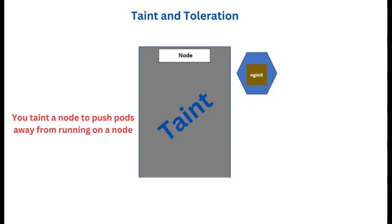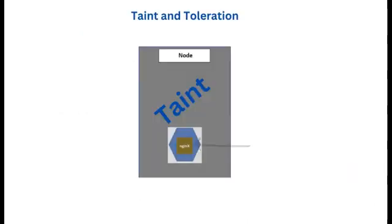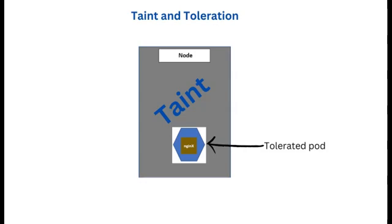So what is toleration? From the word toleration, which means to allow or permit. Similarly, toleration in Kubernetes or OpenShift means permit or tolerate only this set of pods to run on a tainted node. Taints are applied to nodes while tolerations are applied to pods, and that's the reason most master nodes are always tainted so that pods will not be scheduled on them except stated otherwise.